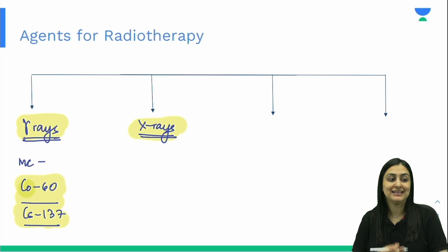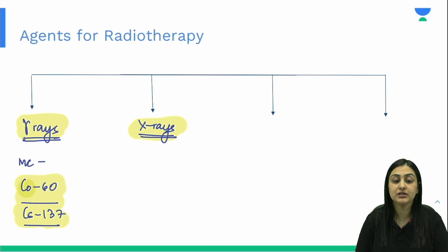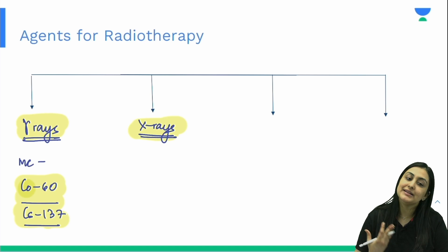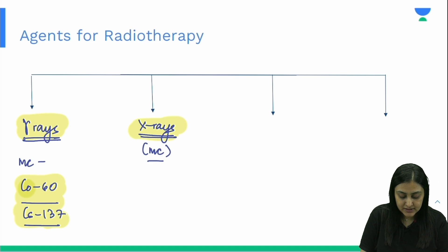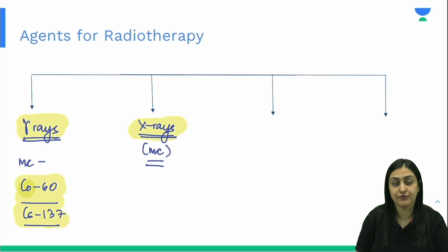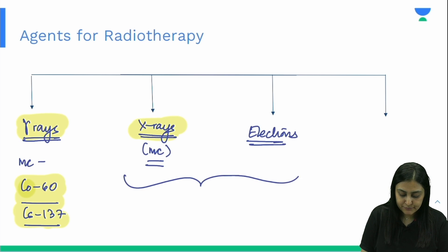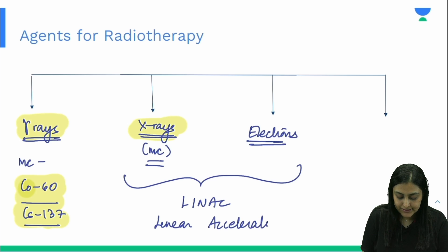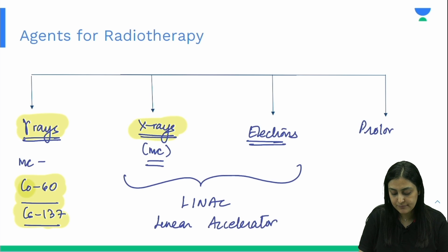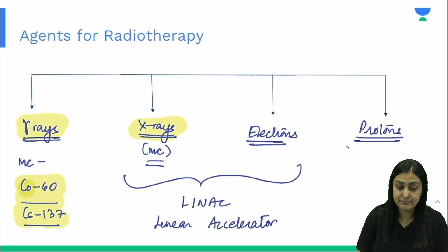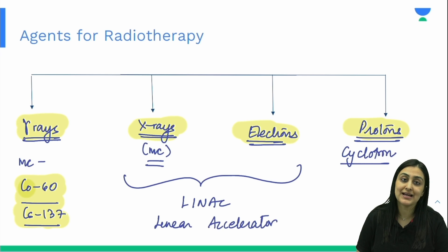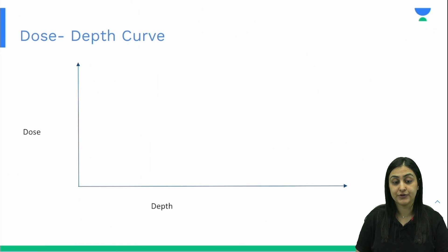X-rays are now preferred because they are produced by a machine — the X-ray tube — which can be turned on and off, and the energy can be modulated depending on the penetration required. Both X-rays and electrons are produced via a machine called a LINAC, which stands for linear accelerator. The latest agents are protons, produced in a machine called a cyclotron.